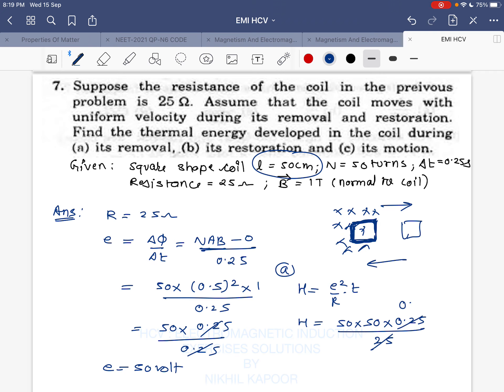So during removal the heat produced will be 25 joules. During restoration, restoration means again the coil is put into the field.